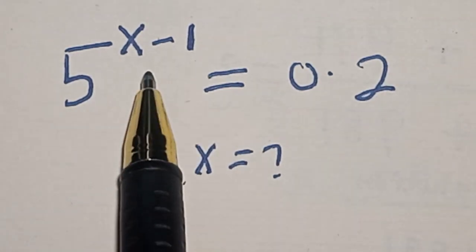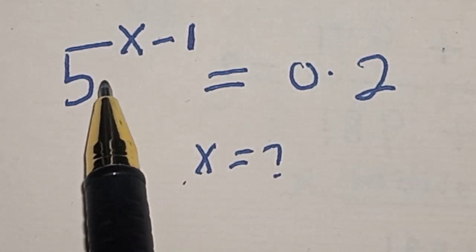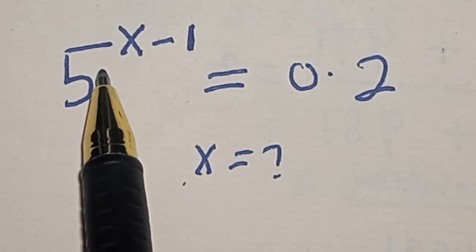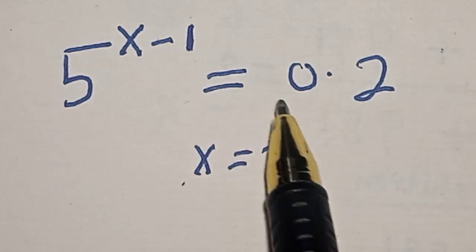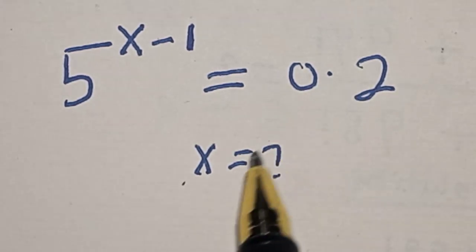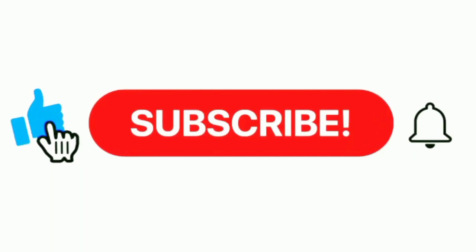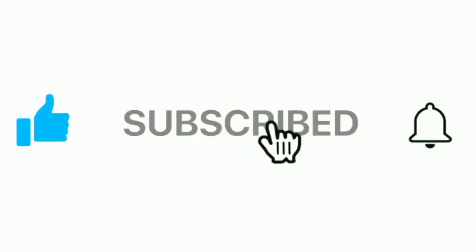Hello, welcome to Math Gist. In this class we want to find the value of x from this given exponential equation: 5 raised to power x minus 1 equals 0.2. What is the value of x? Like, share, comment and subscribe. Solution: